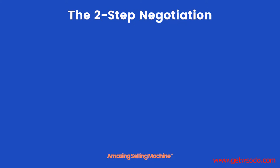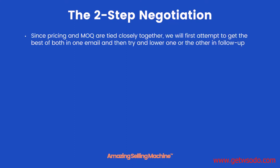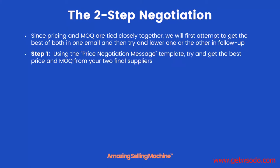Here is a simple two-step negotiation process you can use for placing your first order. You may have your own style of negotiating and that's totally fine — use what you're comfortable with — but this has worked for us and for other sellers in the past. Since pricing and MOQ are tied closely together, in our first attempt we're going to try to get the best of both in one email, then in a follow-up email we'll try to lower one or the other. Step one: using the price negotiation message template, try to get the best price and MOQ from your two final suppliers. Feel free to tweak the message and put it in your own wording — it's just a template in the guide, you don't have to cut and paste it exactly.